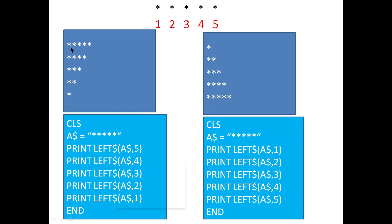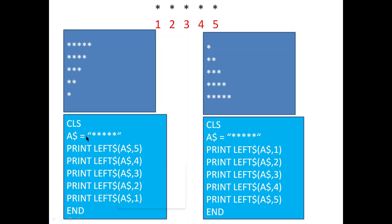We can do the same program using MID$ also, but we are using LEFT$ for now. First, CLS, then a$ equals five asterisks inside double quotation marks because this is a string. We want to print five characters from the left-hand side first time. So we write: PRINT LEFT$(a$, 5) — that gives us five asterisks on the first line.